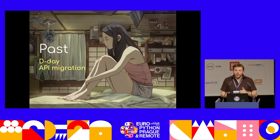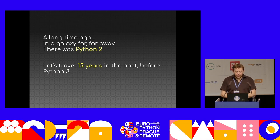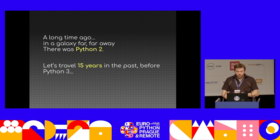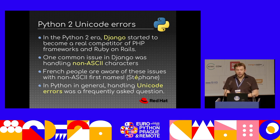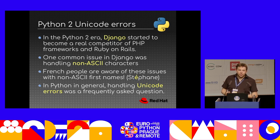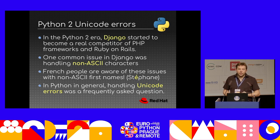First, I would like to come back to the past and how we did the migration using the D-Day approach. So a long time ago, in a galaxy far, far away, there was Python 2. Let's travel 15 years in the past before Python 3. For those who don't know, we had a language called Python 2, and we had some issues. Django became more and more popular, became a good competitor to PHP frameworks, but they wanted to use Unicode for anything related to text. And the problem is that as soon as you use Unicode in Python 2, you get into troubles.